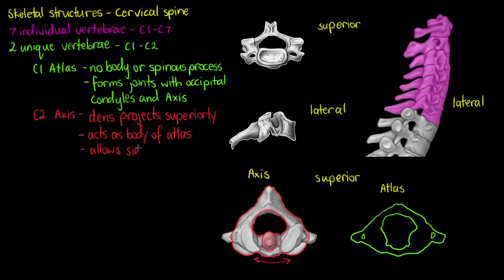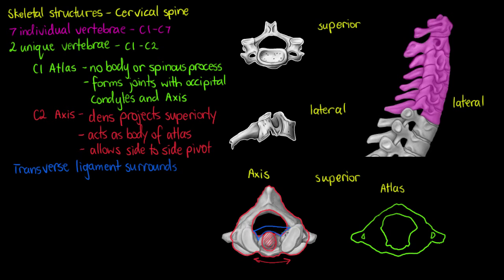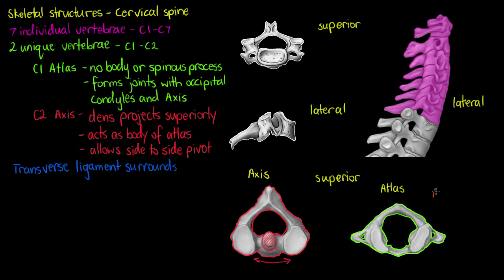So the axis allows side to side movement. We also have a ligament called the transverse ligament, which is going to extend from the atlas and wrap around the dens of the axis. We can see our transverse ligament extending from our atlas around the dens of our axis. Our atlas will allow us to nod yes — forward and backward movement — and the axis will allow us to shake our head no, so side to side movement.